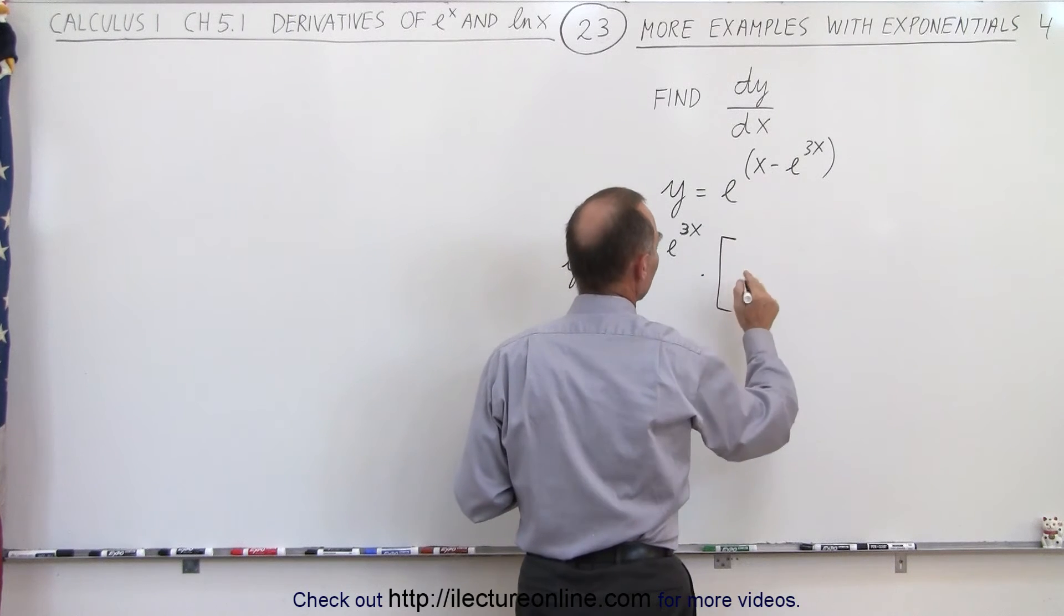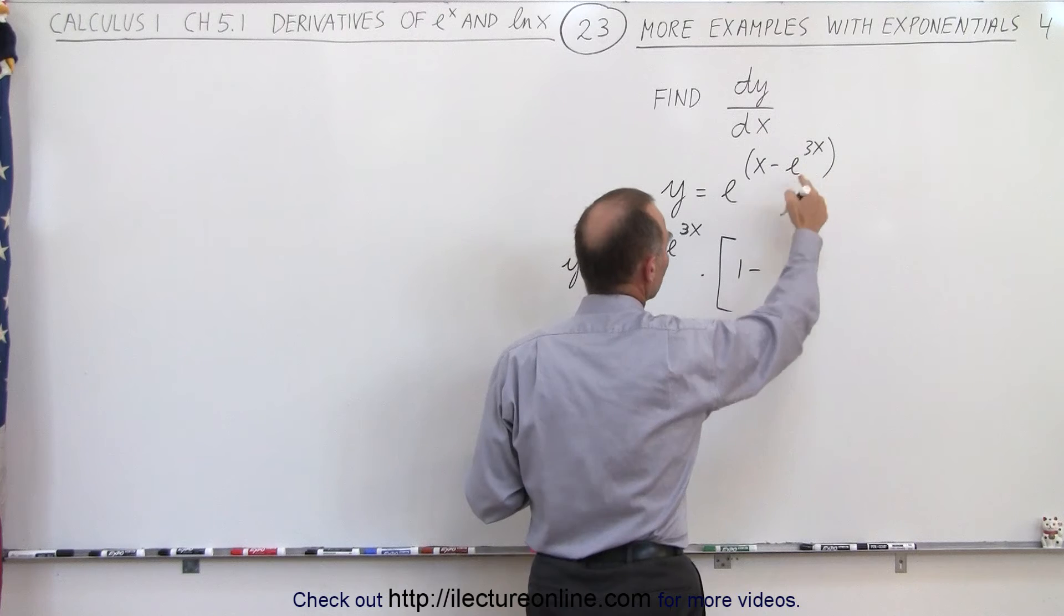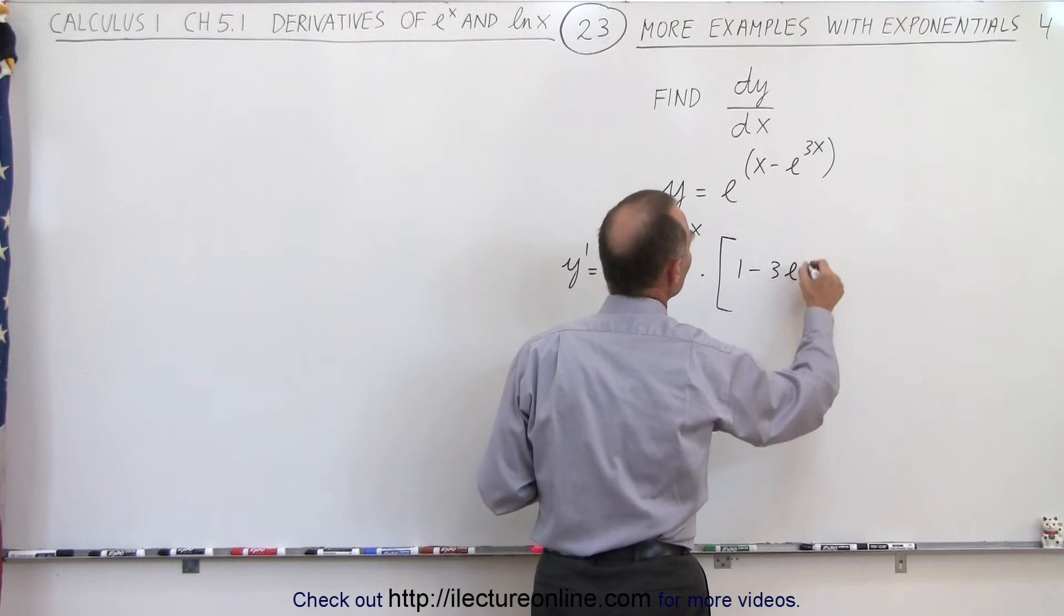So the derivative of x is 1 and the derivative of e to the 3x would be 3 e to the 3x.